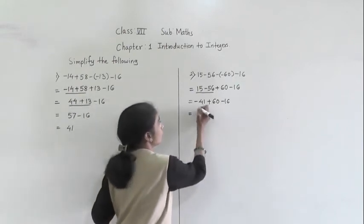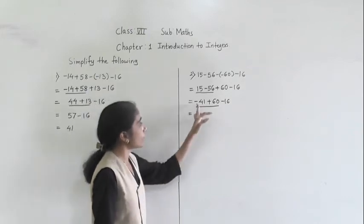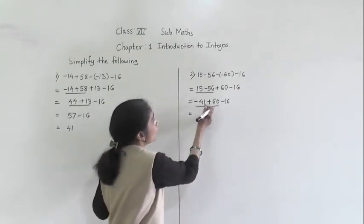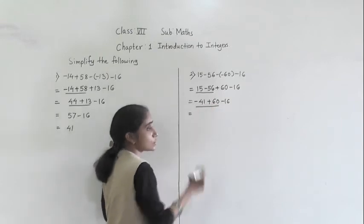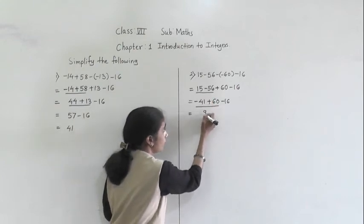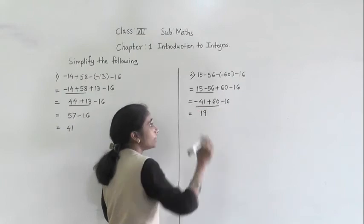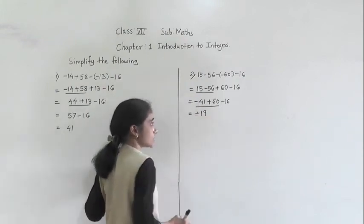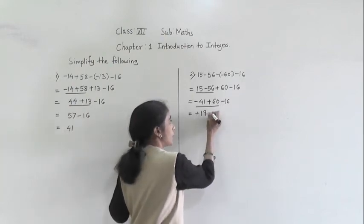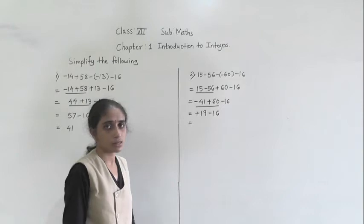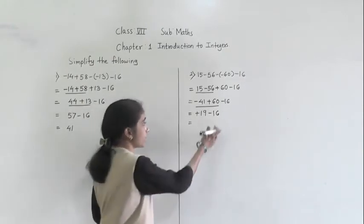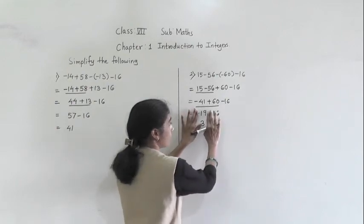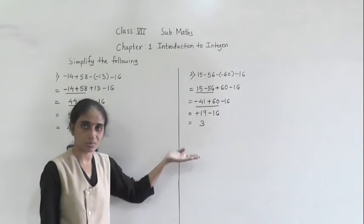Now next step: underline minus 41 and plus 60. Minus plus means minus. Do subtraction: subtract 41 from 60. 0 minus 1 not possible, take borrow: 10 minus 1 is 9. Here remain 5: 5 minus 4 is 1. So we get 19. Which is greater? 60. 60 has positive sign, so for the answer positive sign. Minus 60 remains. Plus minus means minus. Subtract 16 from 19: we get 3. 19 has positive sign, so for the answer plus 3.